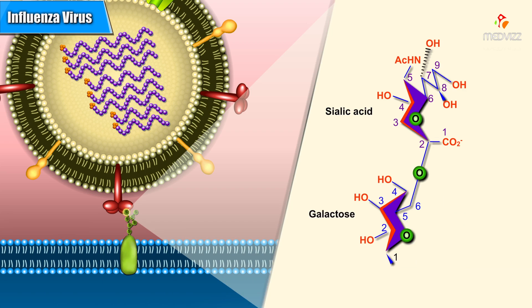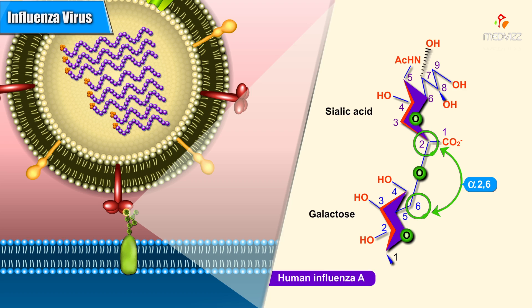In contrast, the upper respiratory tract of humans contains mainly alpha-2-6 link receptors, and it is to these receptors that human influenza A viruses bind.